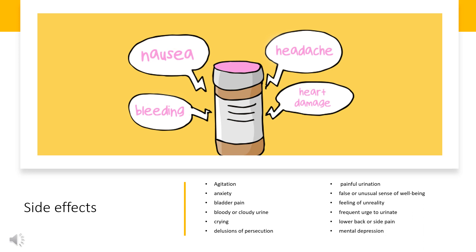Side effects include: agitation, anxiety, bladder pain, bloody or cloudy urine, crying, delusions of persecution, mistrust, suspiciousness, or combativeness, difficult or painful urination, false or unusual sense of well-being, feeling of unreality, frequent urge to urinate, and lower back or side pain.